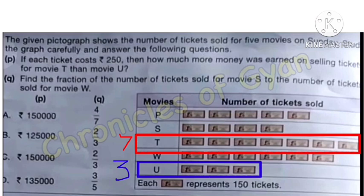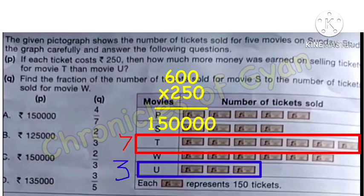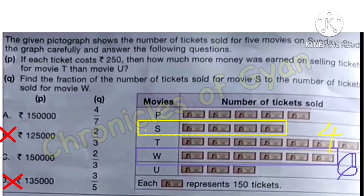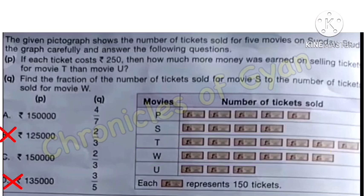Each ticket costs ₹250, so 600 × 250 = ₹1,50,000 more money was earned from movie T. This is shown in options A and C, so options B and D are eliminated. For the next question: fraction of tickets sold for movie S to movie W. Movie S sold 4 symbols and movie W sold 6 symbols — fraction is 4/6 = 2/3. This matches option C, which is the correct answer.